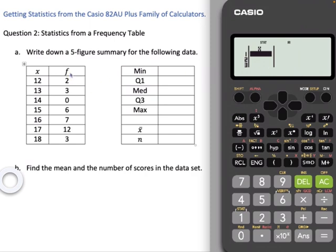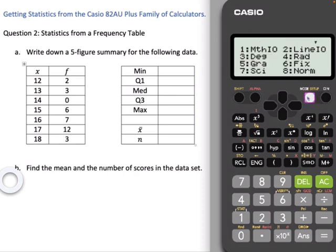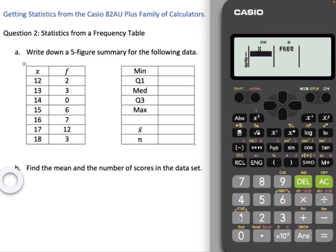Now, the problem here is that we don't have a column for our frequencies, that column there. So how do we do that? We go shift, set up, and you'll see a not very promising list of options. Scroll down to the next line, because there's more than 8 options here, and we go to stat. So press 3, and frequency on or off. You can probably guess which one we are going to select. It's that one there, 1. And magically, a frequency column opens up.